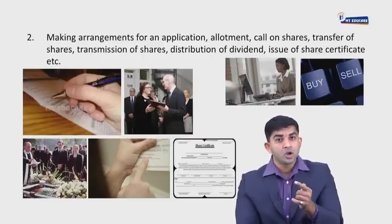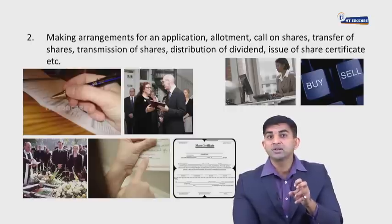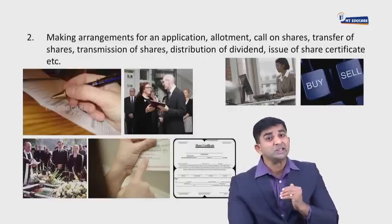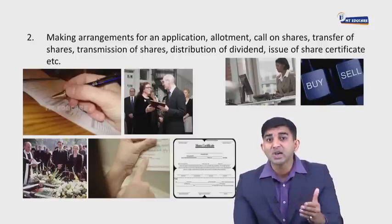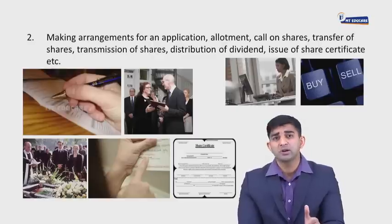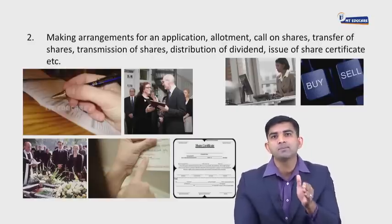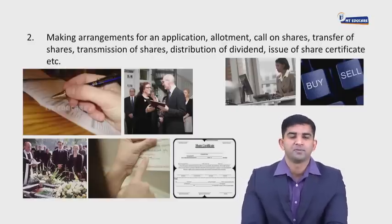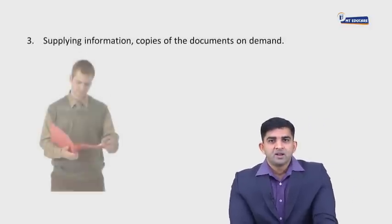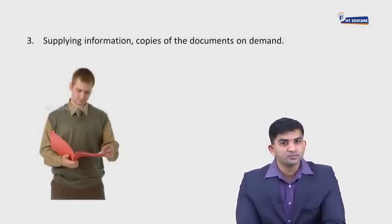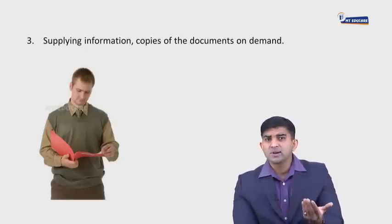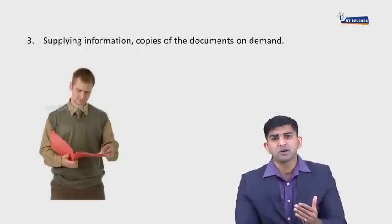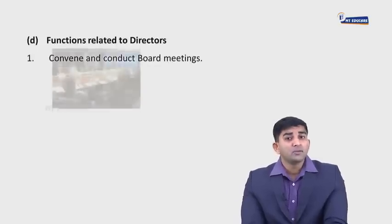Distribution of dividend — dividend is the income on the number of shares a particular person has purchased, so it is income for the shareholder. Issue of share certificate — a share certificate has to be given to each shareholder as documentary proof of being a shareholder of the company. Supplying information and copies of documents on demand — certain documents, as and when demanded by the shareholder, have to be given.